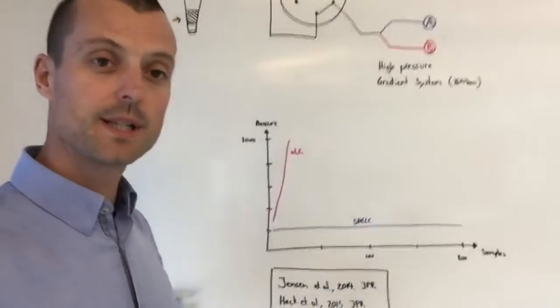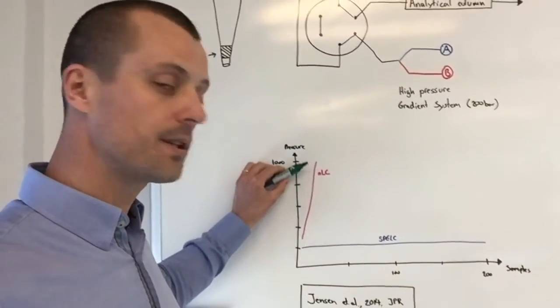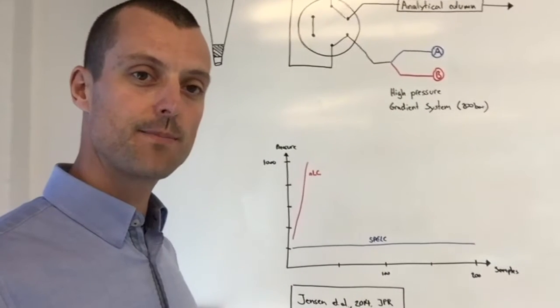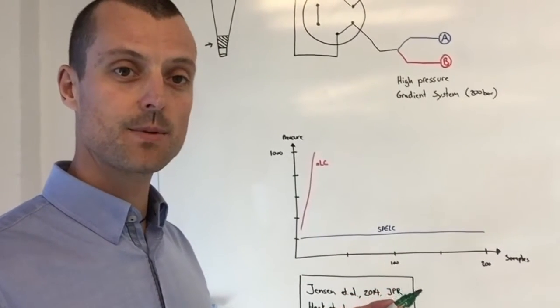So, to illustrate this, we did a partial digest of E. coli. When we ran this sample on a nanoLC system, we would immediately see the back pressure of the system would increase. And within 10 samples, the system would be blocked.